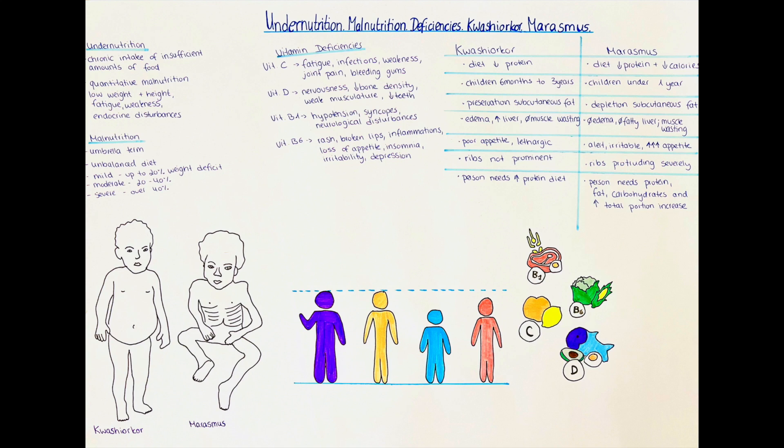In the next and last part, I would like to talk a little bit about specific vitamin deficiencies in children and the clinical signs of the specific vitamins. Vitamin C deficiency usually presents with fatigue, being more prone to getting infections, general weakness, pain in the joints and in severe cases, bleeding of the gums and disturbances in wound healing.